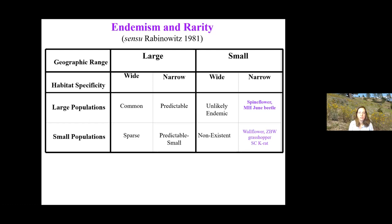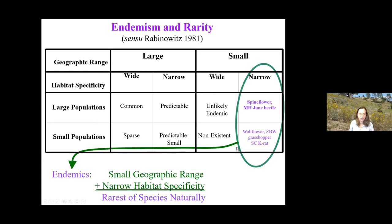Sandhills endemic species are among the rarest of species naturally. They have a very small geographic range — just Santa Cruz County — and a very narrow habitat specificity, meaning within Santa Cruz County they're only found on these islands of sand soil. Those islands originally covered about 7,000 acres, and now we're down to between 3,000 and 4,000 acres of habitat remaining, depending on how you're counting. The Sandhills species are among your rarest of species naturally.